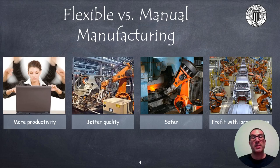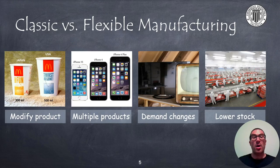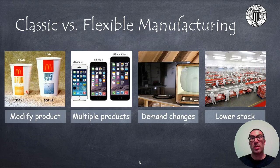Comparing flexible manufacturing with manual manufacturing, we observe that its production is much higher, the quality is better, and it is safer and more profitable for larger series, despite having a low part cost. On the other hand, comparing flexible manufacturing versus classic manufacturing, we observe that through flexible manufacturing we are able to modify and adapt the product to market needs and changes in product demands. Producing similar products in a flexible manufacturing system represents no challenge or extra cost, because it has been designed for that. In general, we will have lower stock because production can be adapted to demands, maintaining a medium or low cost per part.